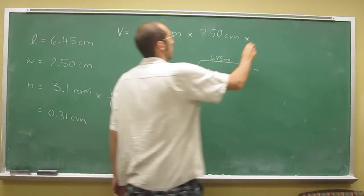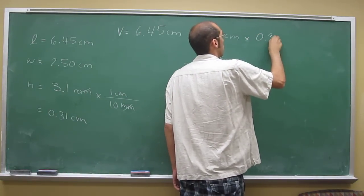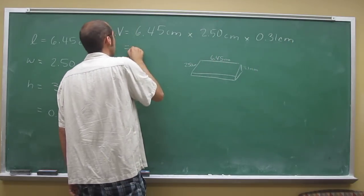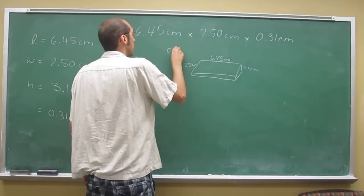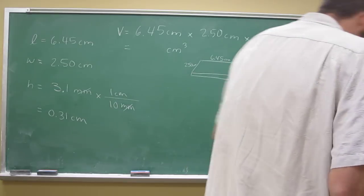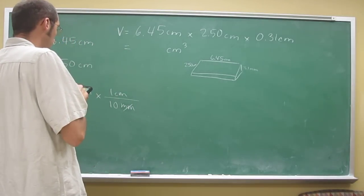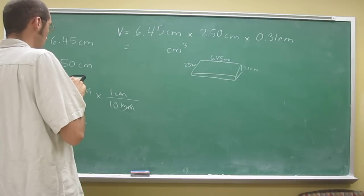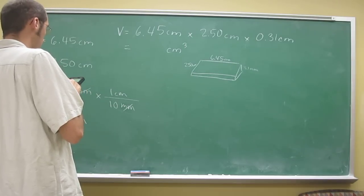So let's take this and put that in. Now we've got centimeters times centimeters times centimeters—it's going to be centimeters cubed. Just take the calculator now and say 6.45 times 2.5 times 0.31.